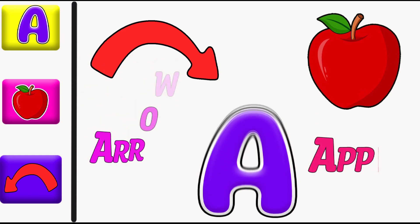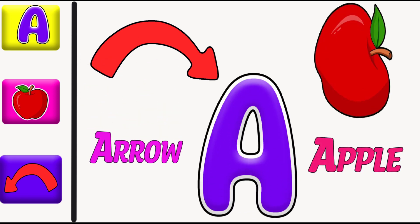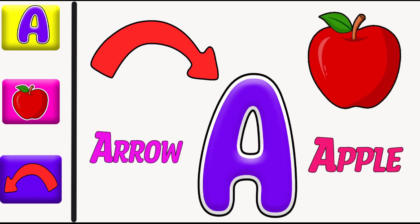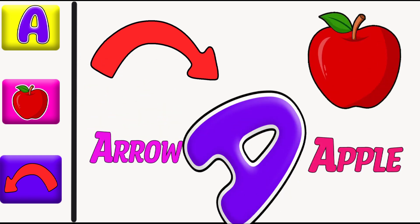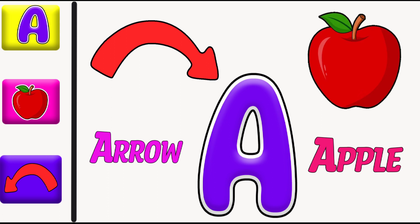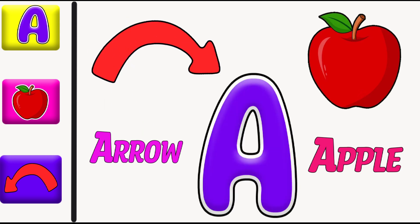A is for... a, a, apple. A is for... a, a, arrow.